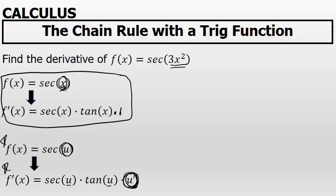Let's apply that to find the derivative of f of x equals the secant of 3x squared. Well, the derivative is going to be, I'm going to consider u to be 3x squared. The derivative of the secant of u is the secant of u times the tangent of u.